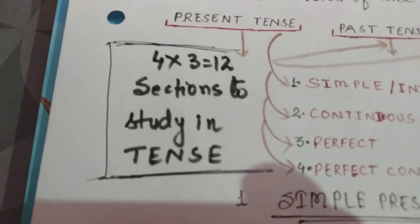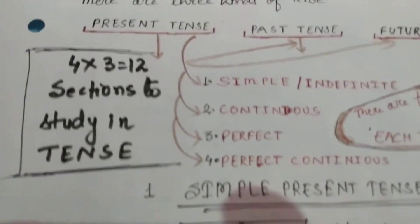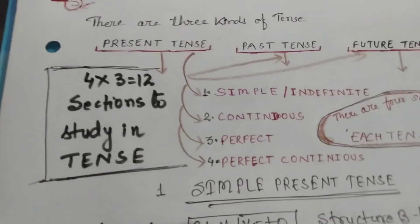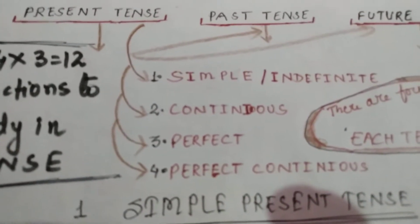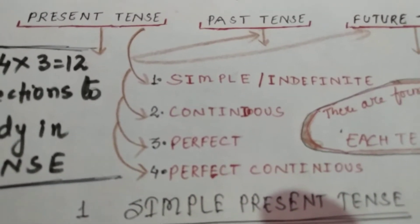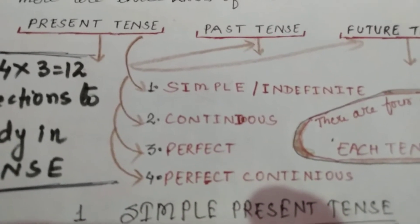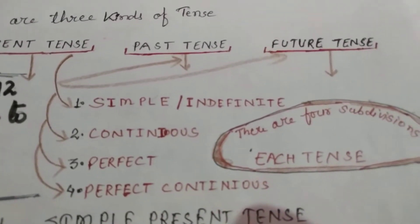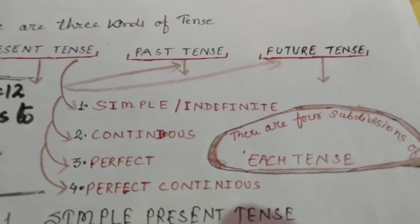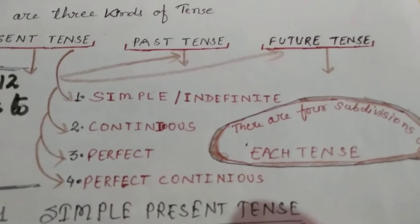Four subdivisions into three tenses equals twelve tenses in total. For example: simple present tense or present indefinite, present continuous, present perfect, present perfect continuous; past indefinite, past continuous, past perfect, past perfect continuous; and simple future, future continuous, future perfect, future perfect continuous.